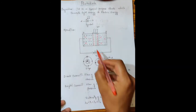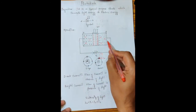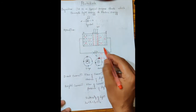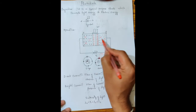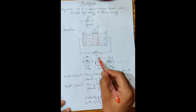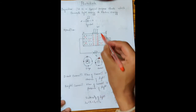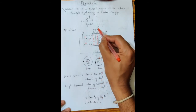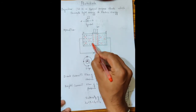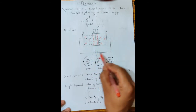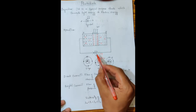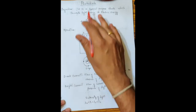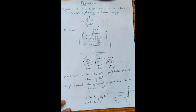This movement of charge carriers due to light energy is nothing but electrical energy. That is how light energy is converted to electrical energy — this is the mechanism of the photo diode.